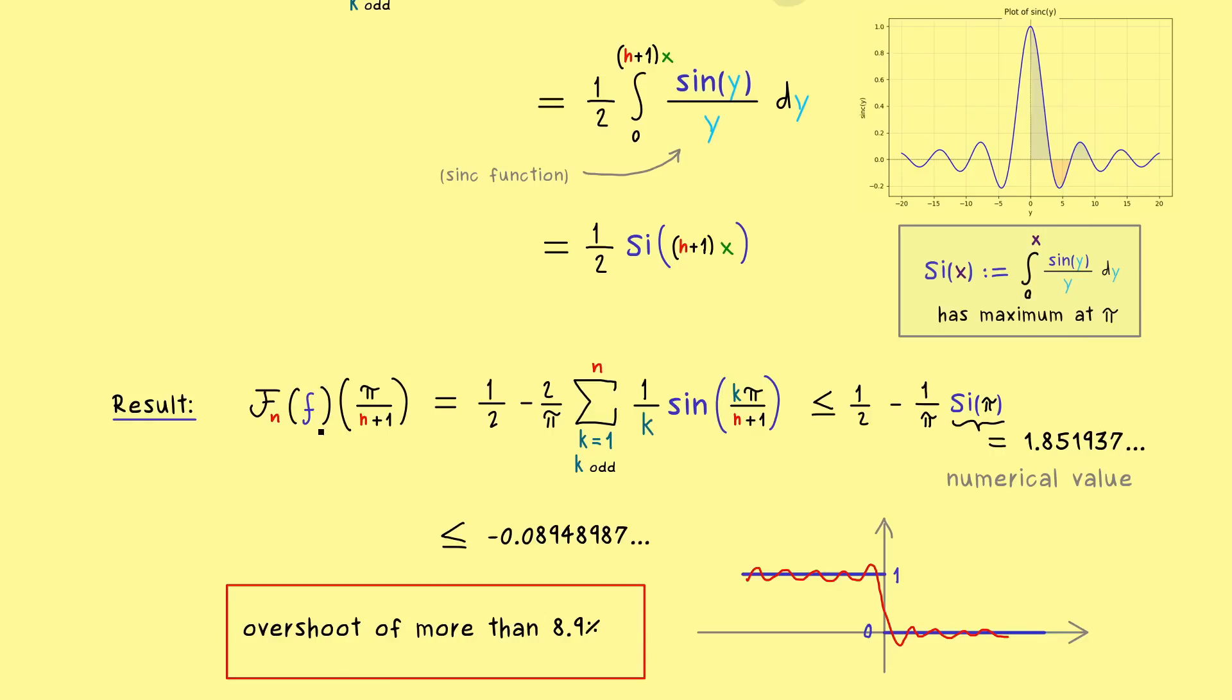And there we have it, this is what we call the phenomenon of Gibbs. In fact, Gibbs discovered it as a measurement error, but it's actually a mathematical fact, as you have proven now. Okay, then I would say, let's meet in the next video and have a nice day. Bye bye.